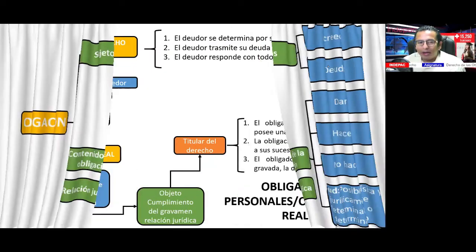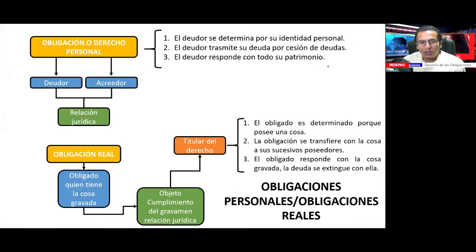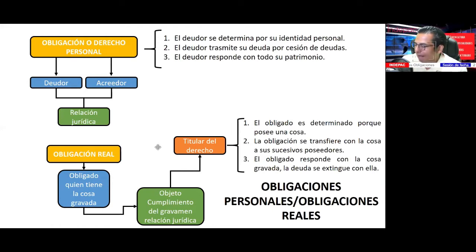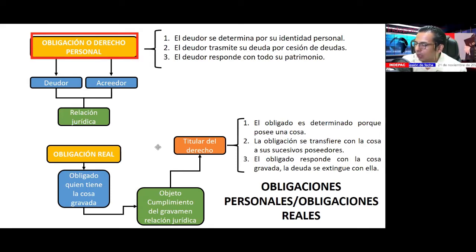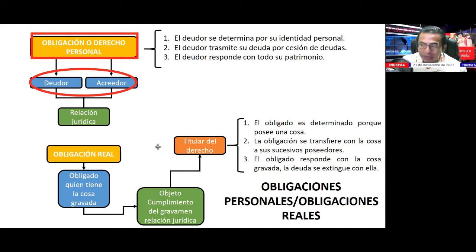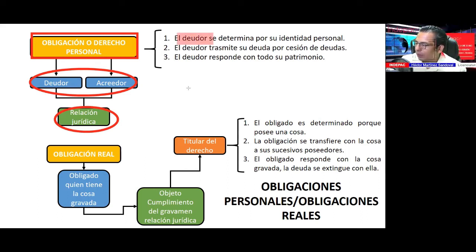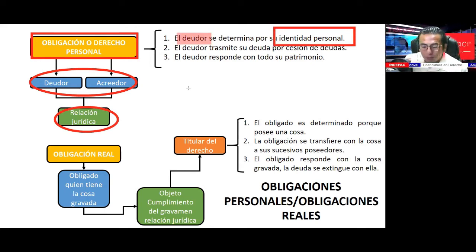Obligación real y obligación personal. La obligación personal es el vínculo que existe entre dos sujetos, acreedor y deudor, con una relación jurídica entre las partes. El deudor se determina por su identidad personal. Yo celebro un contrato con Carlos García; Carlos García incumplió con el contrato, Carlos García es el deudor.